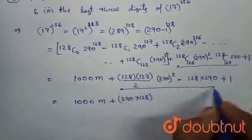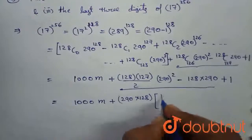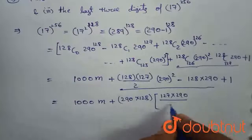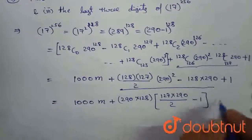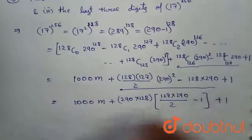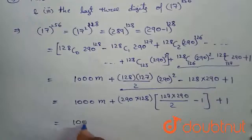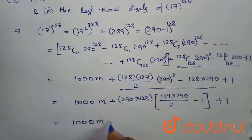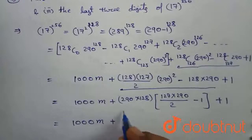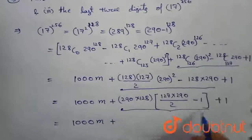From these two equations, we will get 127 into 290 divided by 2 minus 1 plus 1. From outside the equation, 1000 M plus, after simplifying these...